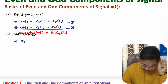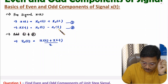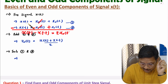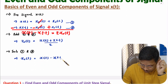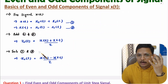So the even component equals x(t) plus x(-t) divided by two. And if you subtract the two signals, the even component gets cancelled, giving x(t) minus x(-t) equals two times the odd component. So the odd component equals x(t) minus x(-t) divided by two. Now I will explain four examples based on these even and odd components.